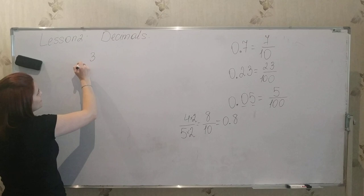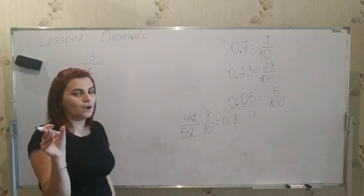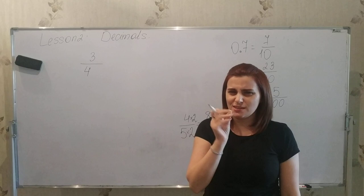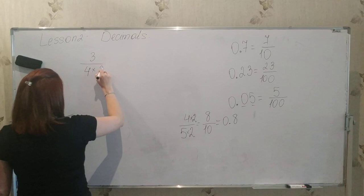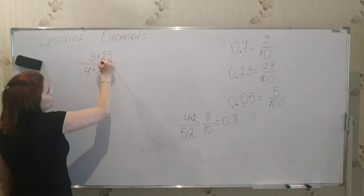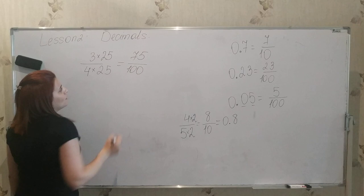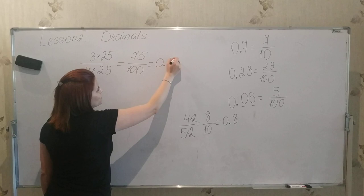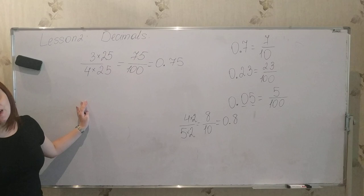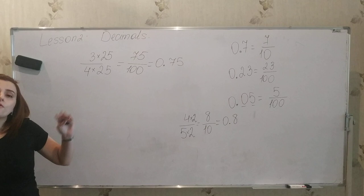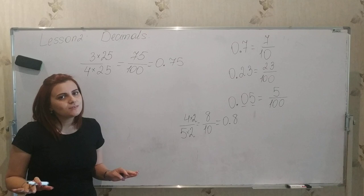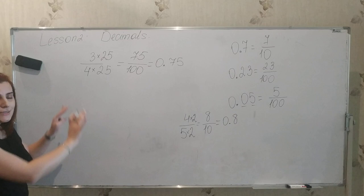Another example: three fourths. Four times what equals ten? That's a bit difficult, so let us make the denominator one hundred. Four times twenty-five is one hundred, so we also multiply three by twenty-five to get seventy-five. Three fourths equals seventy-five hundredths, which we write as zero point seven five. There can be cases where it's harder to convert the denominator, but don't worry — for your grade, you won't meet such problems; those are for upper grades.